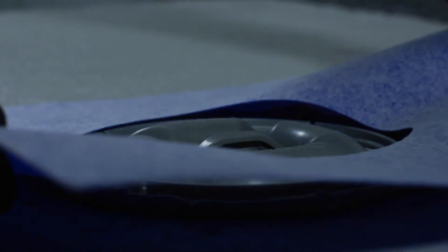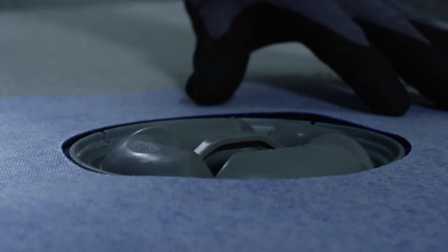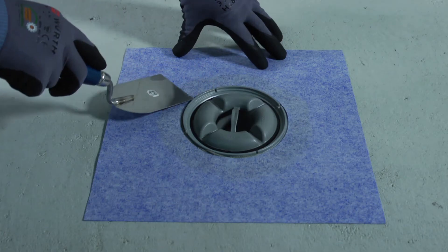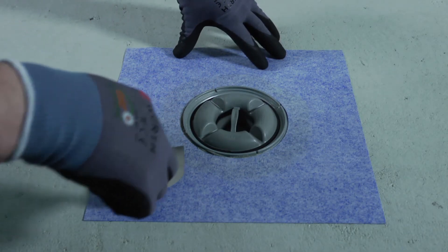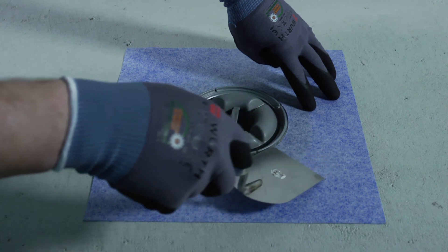Place the membrane onto the drain flange. With a flat trowel, evenly press around the entire membrane to assure a uniform spreading of the adhesive.